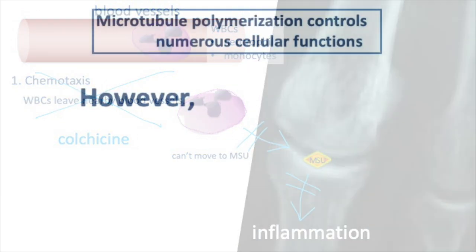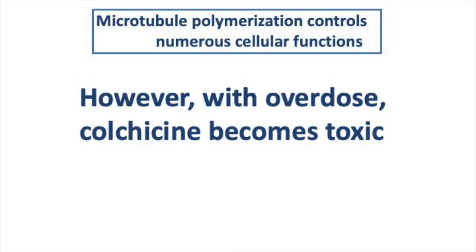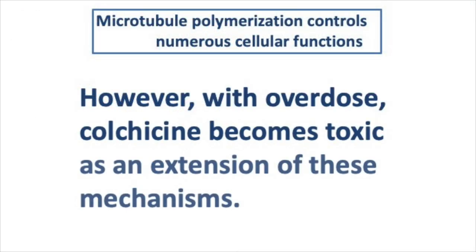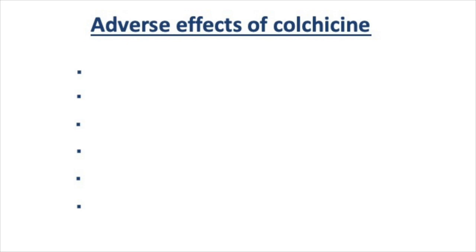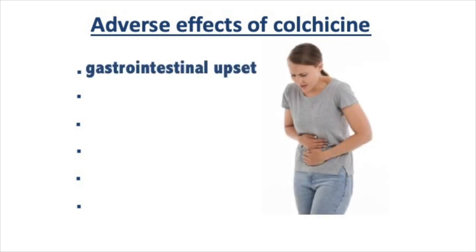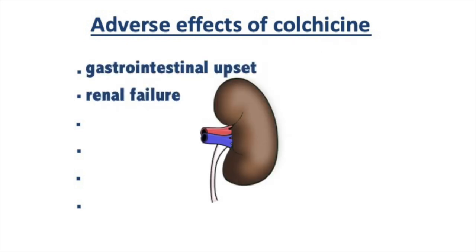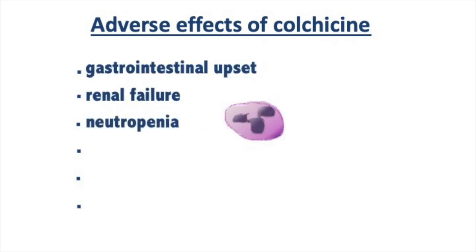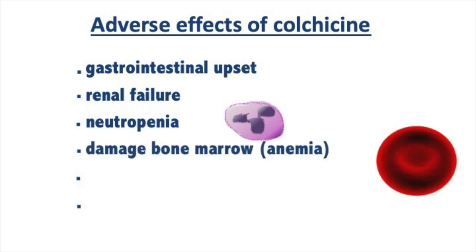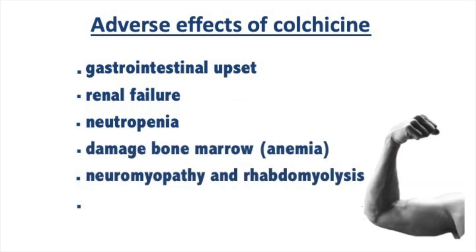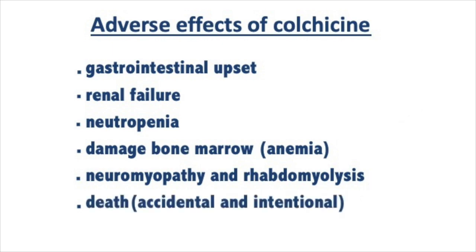However, with overdoses, colchicine becomes toxic as an extension of these mechanisms, causing gastrointestinal upset, renal failure, neutropenia, bone marrow damage, neuromyopathy, rhabdomyolysis, and death.